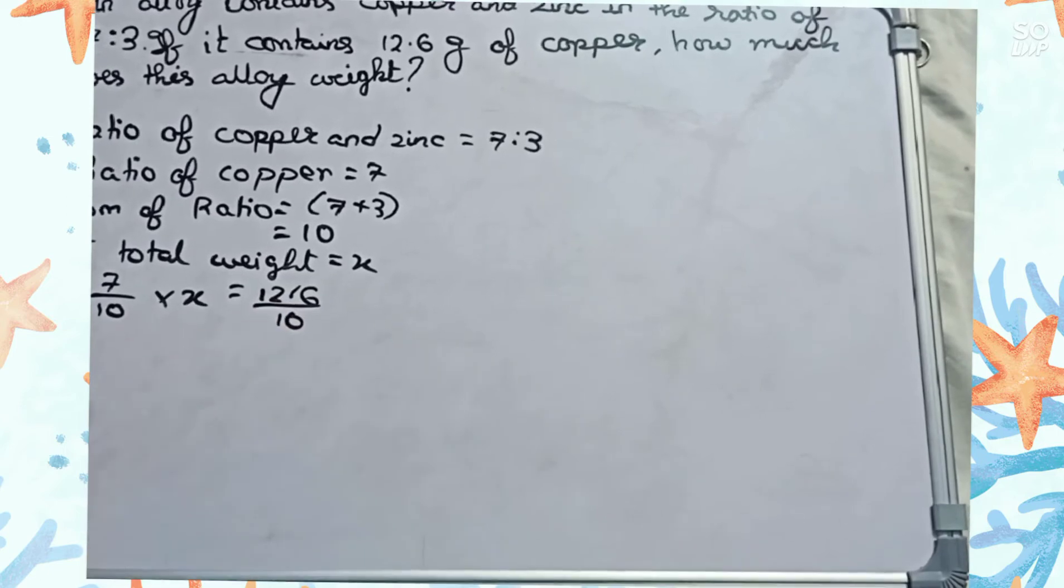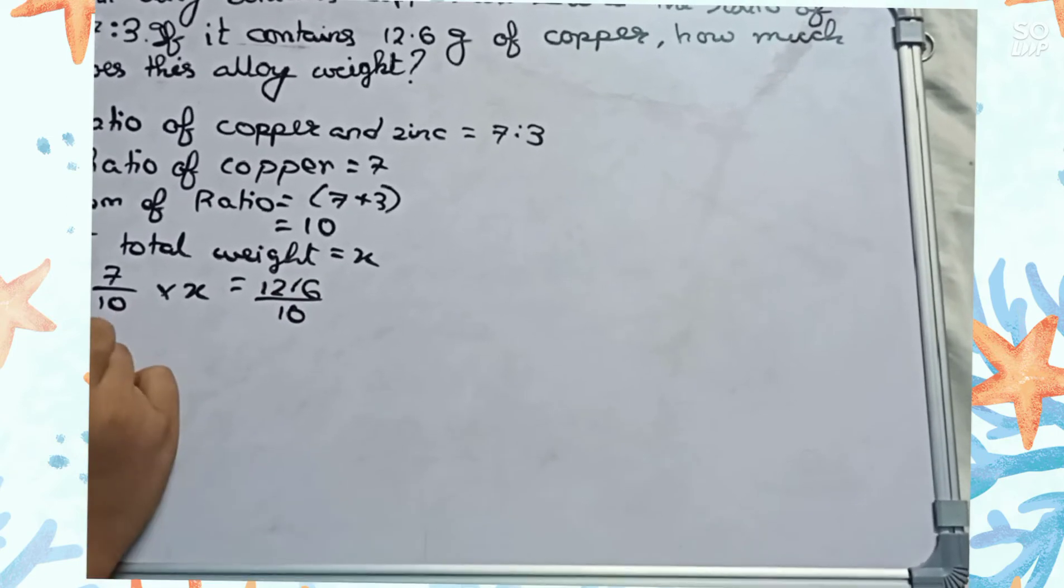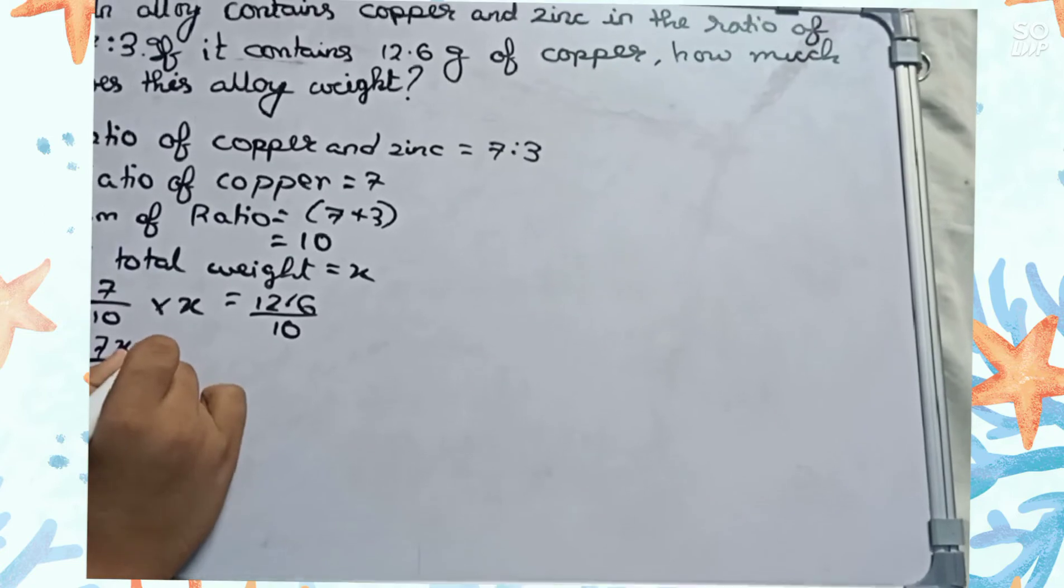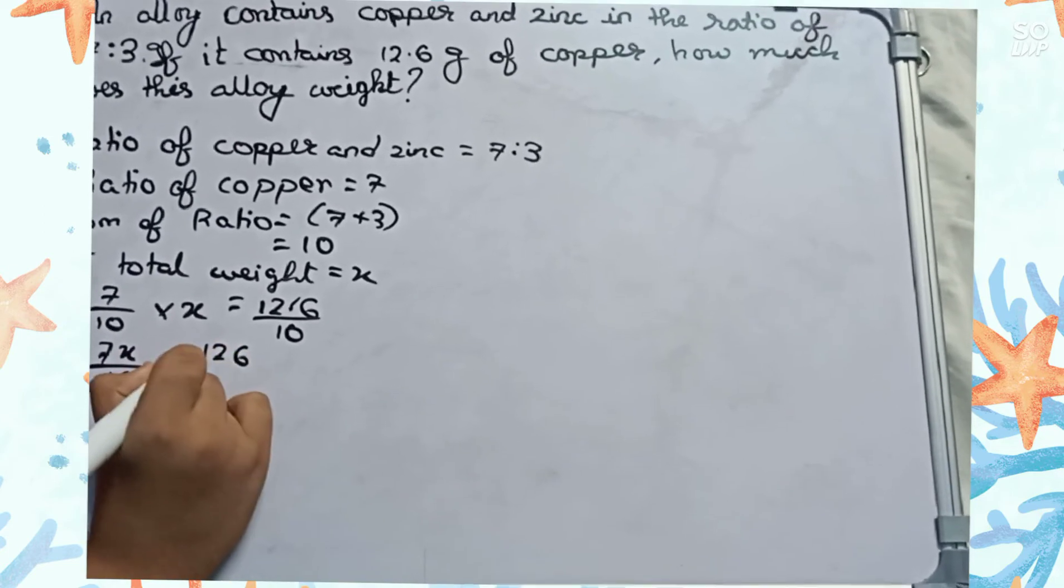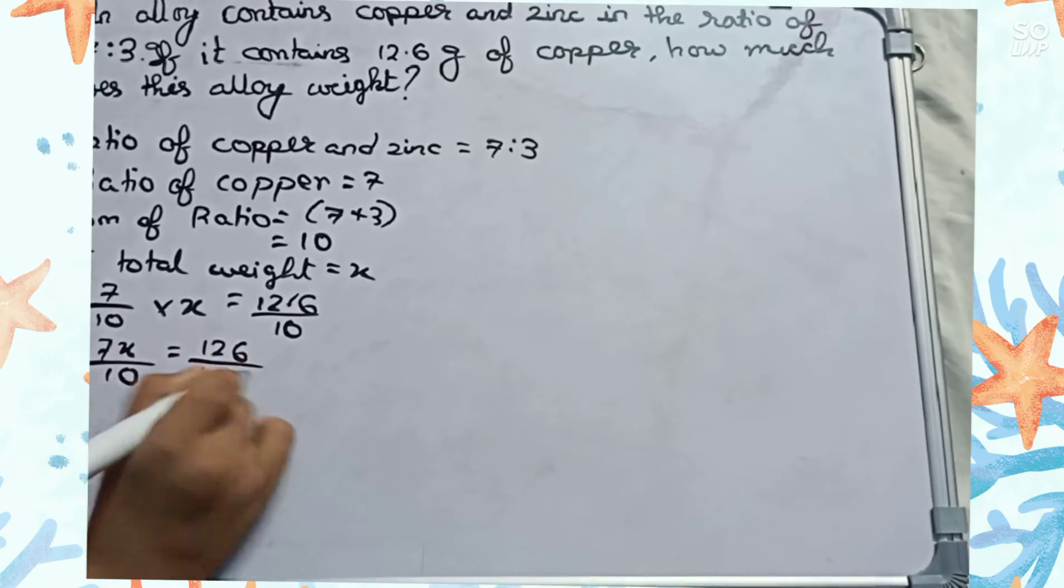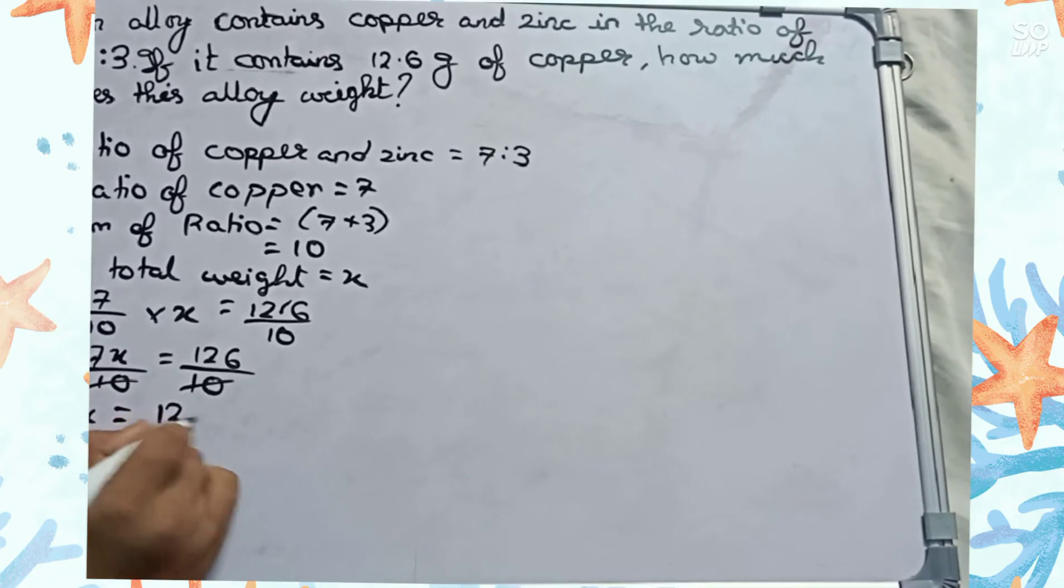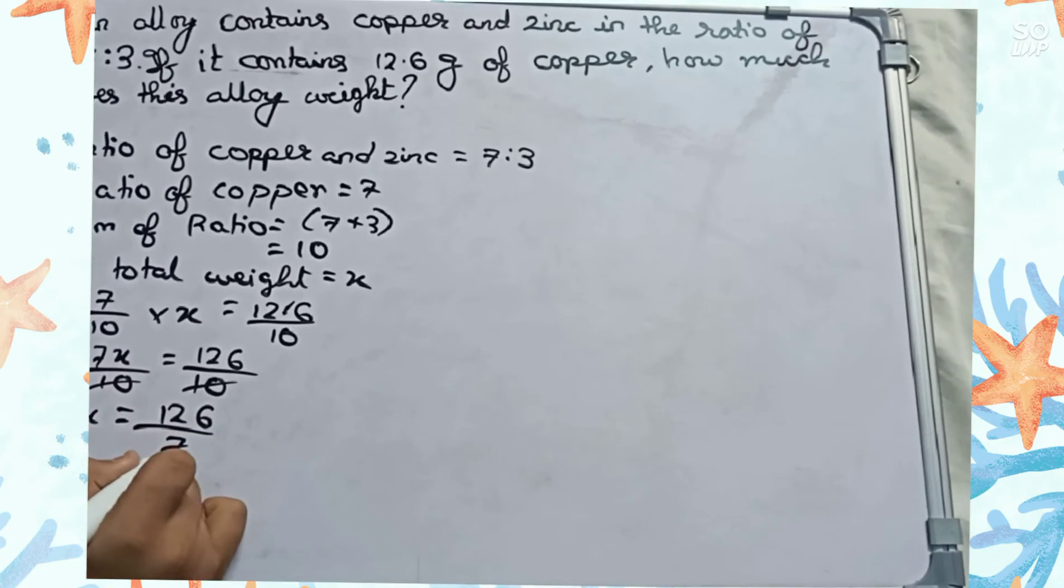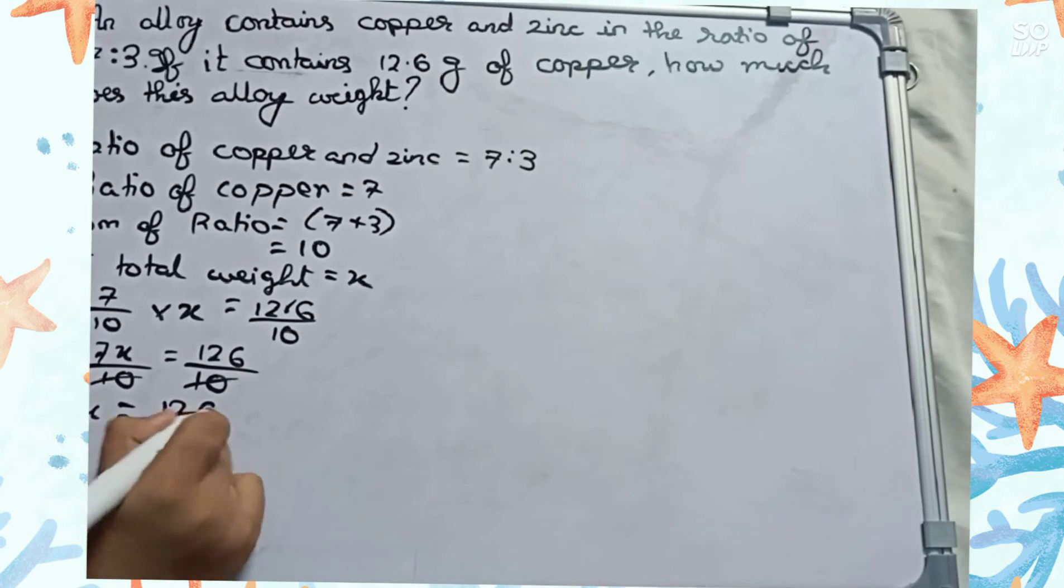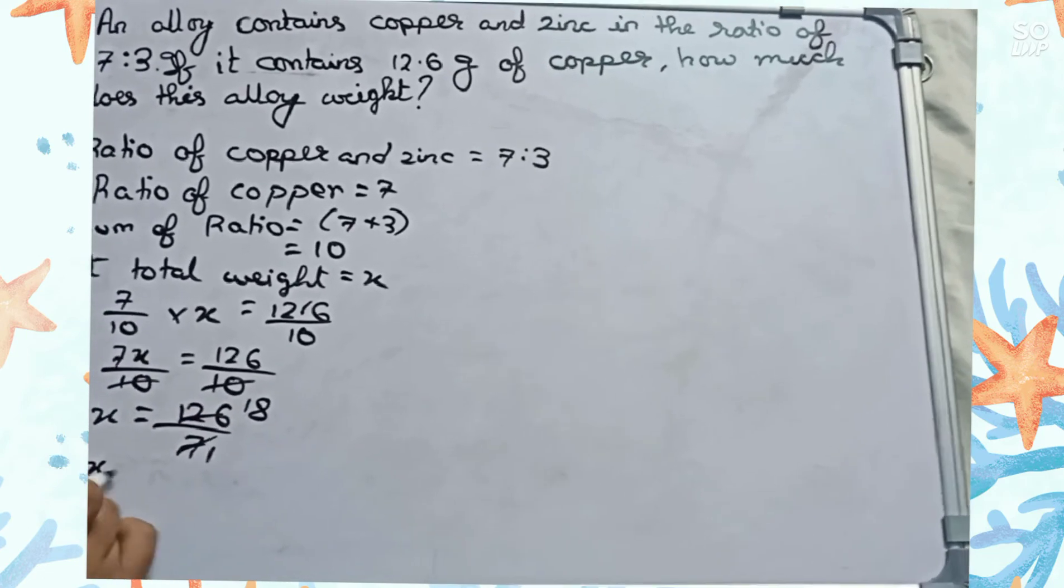We cut the denominator. So x equals to 126 by 7. We can simplify it and it will become 18 by 1, so x equals to 18.